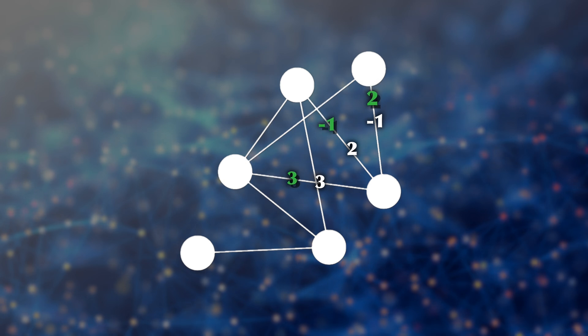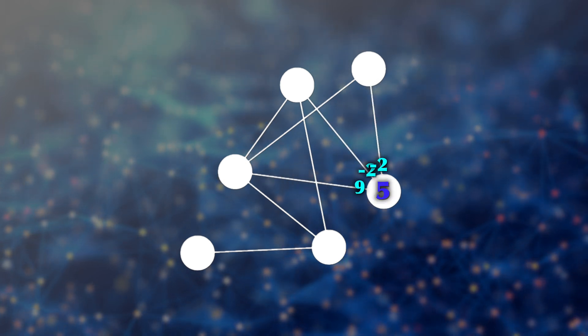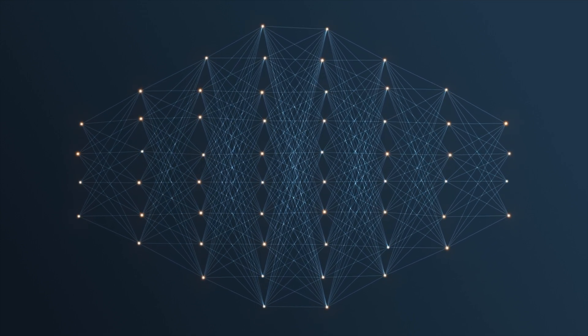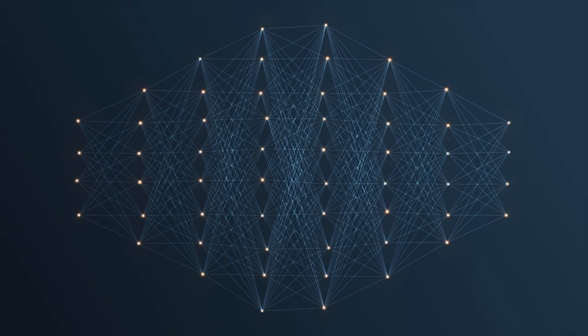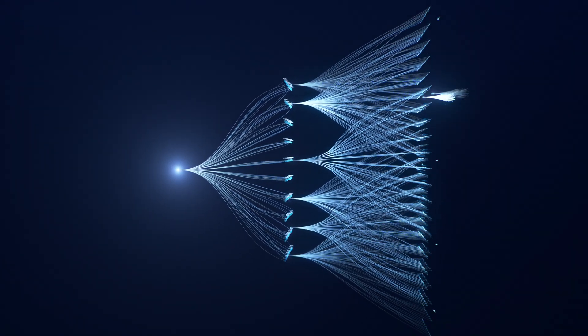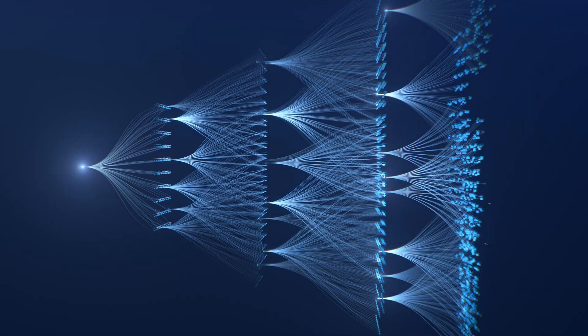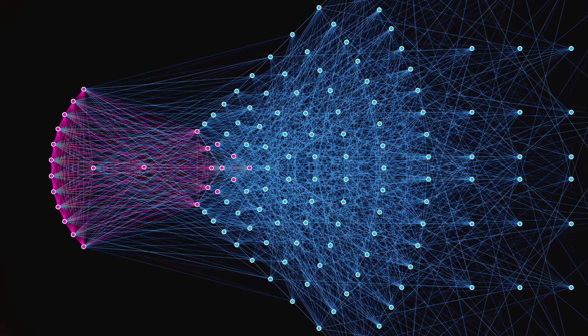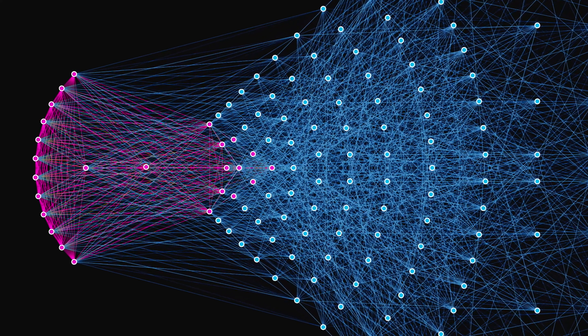Edges being weighted means they will influence the computation at the node more or less depending on their weight. For example, all inputs at a node might first be multiplied by their weight and then added up. Notice that all the computations performed here are very basic — just addition and multiplication. Even with just a small number of nodes, you can have a gigantic number of edges, and this is where the great complexity and power of neural networks come from. A neural network is just a very complex, convoluted function: you put some numbers in at one end, some computations are performed, and then you get some numbers out.